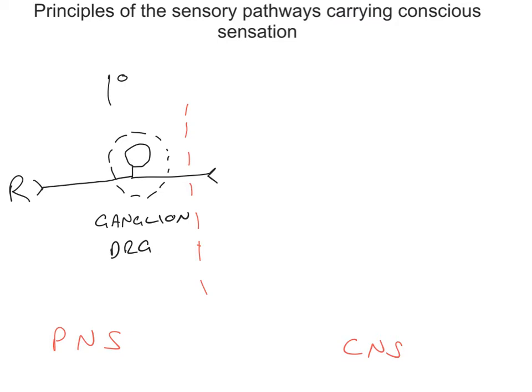It is this first order neuron which crosses that boundary and enters into the central nervous system. Once the first order neuron enters the central nervous system, it synapses upon what we call our second order neuron. Our second order neuron lives entirely within the central nervous system. The second order neuron does something very interesting and very important: in all cases when we're considering the somatosensory system, the second order neuron crosses the midline.